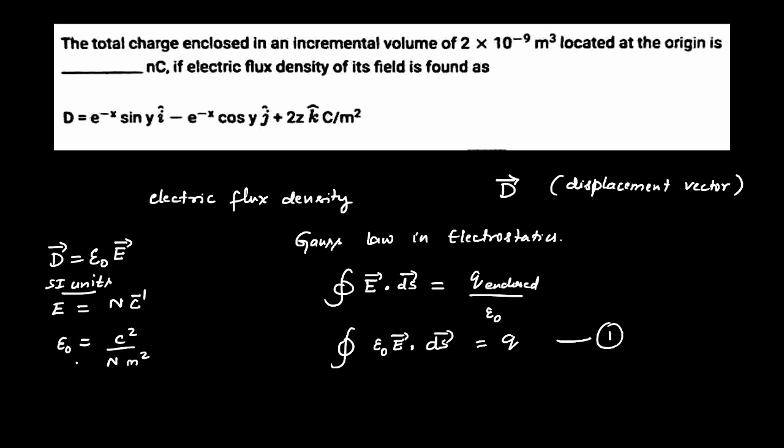If we multiply epsilon naught and E, you can easily observe that it turns out to be coulomb per meter squared. This is to convince you we are introducing a new vector called D which is epsilon naught times E. Now I'm going to write the surface integral of D dotted with dS equals q. This is our equation two.